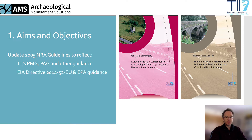The NRA guidelines published in 2005 have been a valuable tool for cultural heritage practitioners undertaking impact assessments and related work on behalf of TII, but they've reached a point where they need to be brought up to date and into alignment with other guidance, such as TII's new landscape and visual impact assessment guidelines published in December 2020, and with TII's project management and project appraisal guidelines. The new cultural heritage guidelines also aim to reflect the requirements of the amended EIA directive of 2014, which brought about key changes in how EIAs are to be undertaken, including the requirement that EIA reports are compiled by competent experts. The EPA published draft guidelines in 2017 based on this amended directive, which are in the process of being finalised, and the new TII guidelines have been developed to align with these.